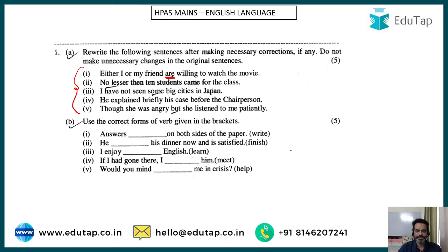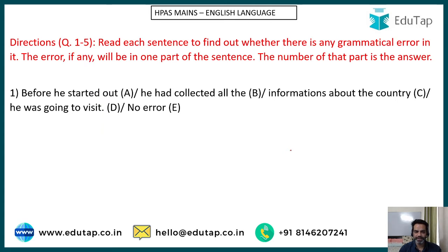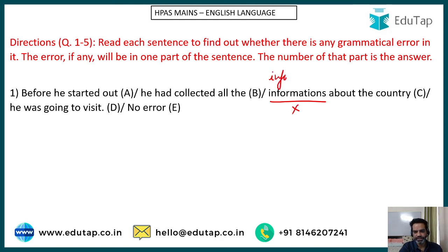Step by step we'll discuss such questions and practice more so we can understand what type of questions you may face in the exam. Today we'll be taking up five questions based on a similar pattern — you are given a sentence and you have to find the error. First question: 'Before he started out, he had collected all the informations about the country he was going to visit.' The error here is 'informations' — we never use 'information' in plural form. Information is already a collection of data; it is a collective noun and is not used in plural form.